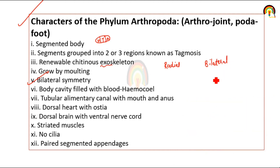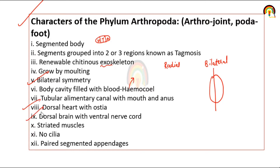Bilateral symmetry का मतलब है कि अगर हम इसको दो में divide करेंगे तो ये two equal halves में cut हो सकता है — that is bilateral symmetry. Body cavity is filled with blood — hemocoel cavity होगी. Tubular alimentary canal होगी with mouth and anus. Dorsal side में heart present होगा और dorsal side में ही brain present होगा. Paired segmented appendages होंगे।